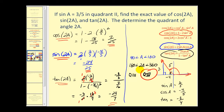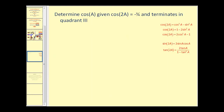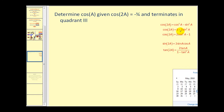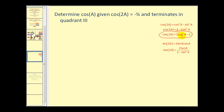Let's take a look at another problem. Here we'll use the identities in reverse. We want to determine the cosine of angle A given that cosine two A equals negative three fourths and the angle terminates in the third quadrant. Looking at our identities, we can find cosine of angle A using the identity with cosine of two A.